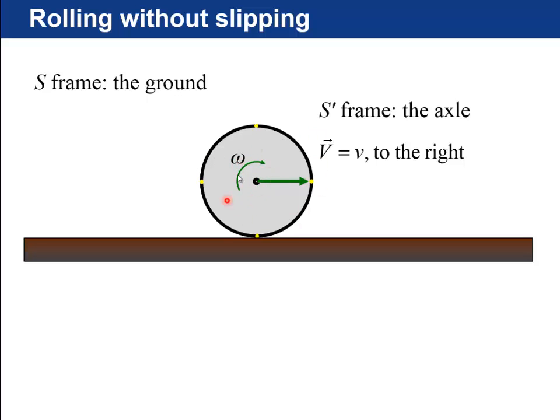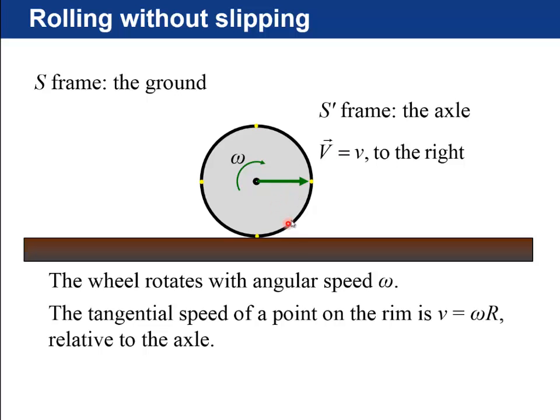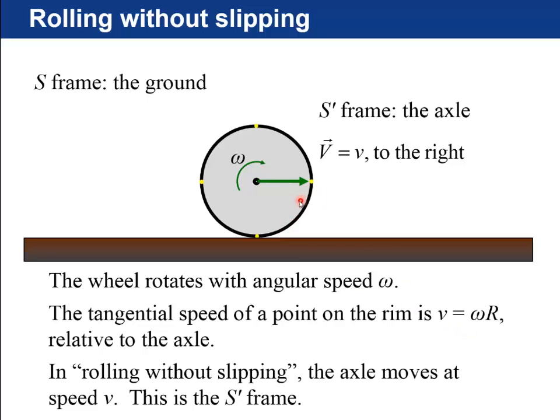You have a wheel that's rotating around its axle, and then also the axle is moving linearly. So here's this rotation, which is now clockwise, omega, and that's a wheel, and it's moving towards the right. So the tangential speed of a point on the rim is going to be omega times r relative to the axle. But with rolling without slipping, the axle is moving at this speed v towards the right. And so this capital V is what we call the S prime frame.